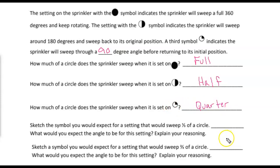So sketch a symbol you would expect for a setting that would sweep one-third of a circle. If we're going to have one-third of the circle, we would need about a third of the pie. So something kind of like that. Obviously, I didn't measure that with the protractor, but that looks like about a third. It's not half. It's not a quarter. It's kind of somewhere a little bit more than that.